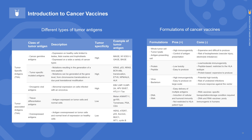Cancer vaccines can be classified into four groups based on the biologic formulation or antigen source, including nucleic acids, peptides, recombinant proteins, microbial vectors, whole tumor cells either autologous or allogeneic, manipulated antigen-presenting cells, and other artificial systems. Among them, peptide or protein-based vaccines, nucleic acid-based vaccines, and microbial vector-based vaccines are quite similar to those of vaccines for infectious diseases.